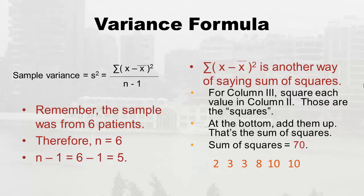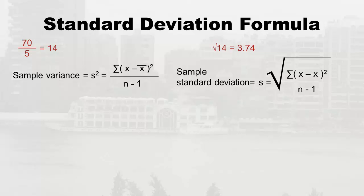We're back at the sample variance formula, and the numerator is 70 — the sum of squares. The denominator is n minus one: n was 6, so the denominator is 5. So s-squared equals 70 divided by 5, which equals 14. That's the variance. It's tedious to make the table, but not really hard. Now, guess how we get the standard deviation — we take the square root of 14. Put 14 in your calculator, hit the square root button, and you get approximately 3.74. That is your sample standard deviation.